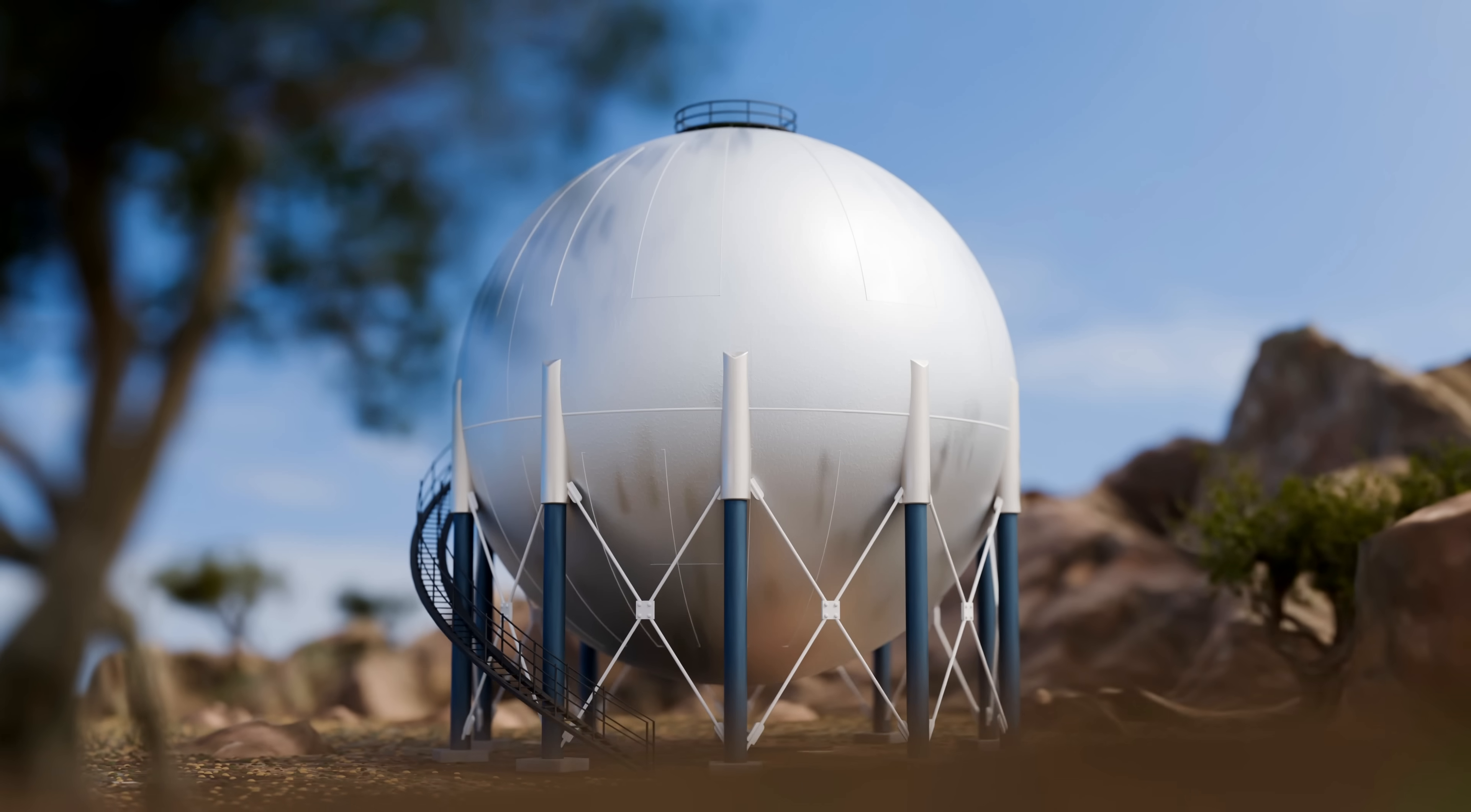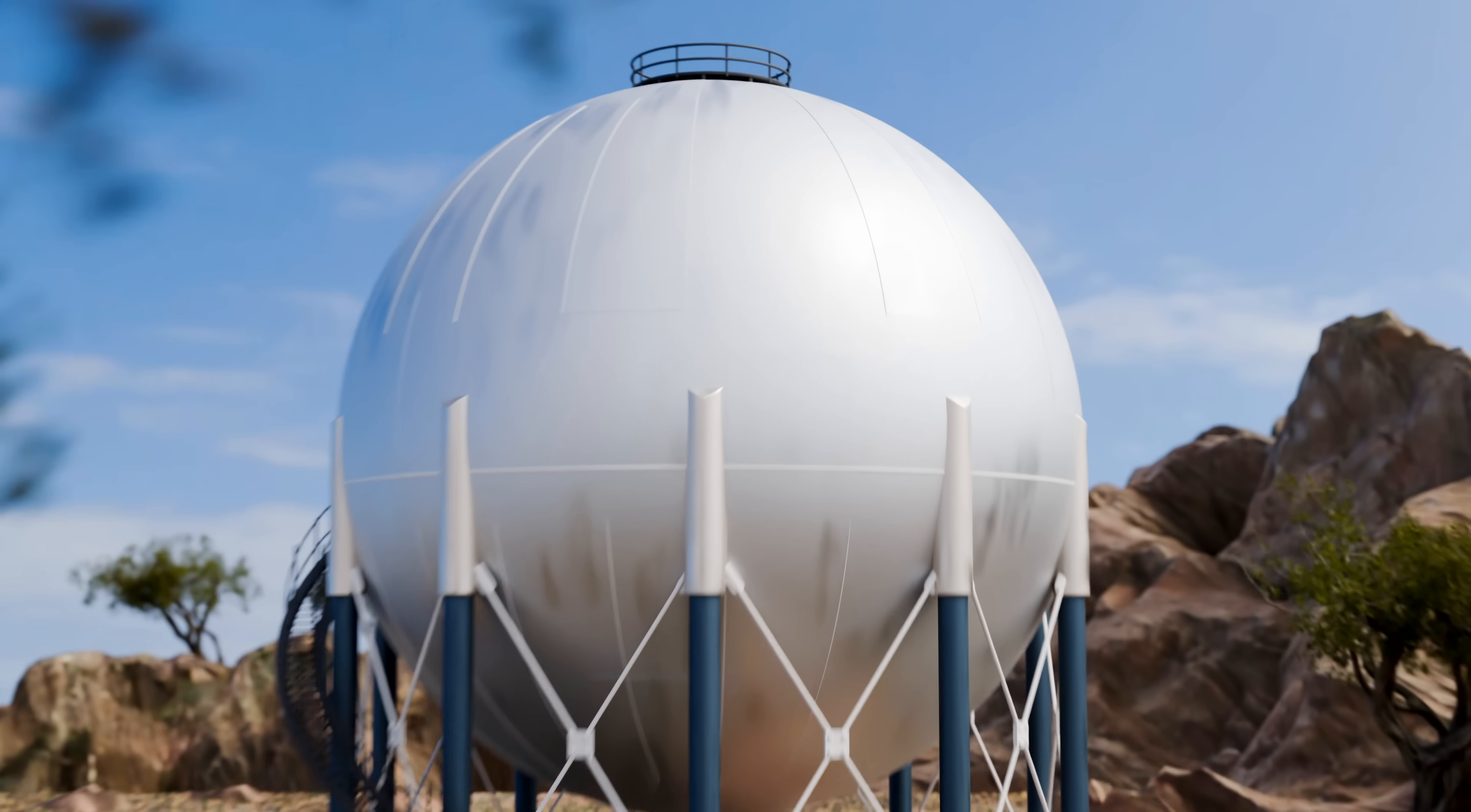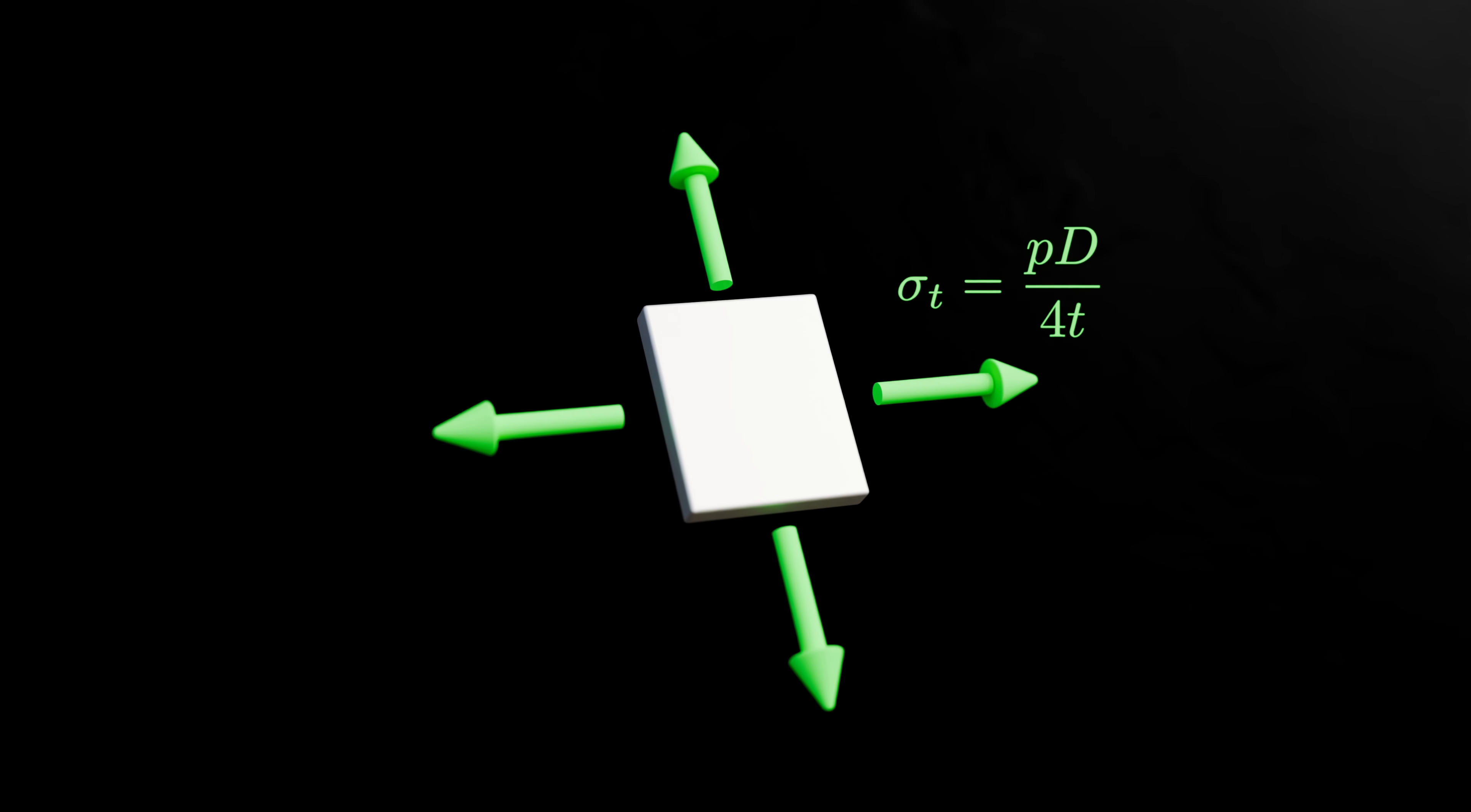So what about spherical pressure vessels? The curvature of a spherical vessel is the same in every direction. This means that, at any point in the vessel wall, the in-plane stress is the same in all directions, and there's no distinction between hoop and longitudinal stress like there is in cylindrical pressure vessels. This stress is equal to PD over 4T. This is the huge advantage of spherical pressure vessels.